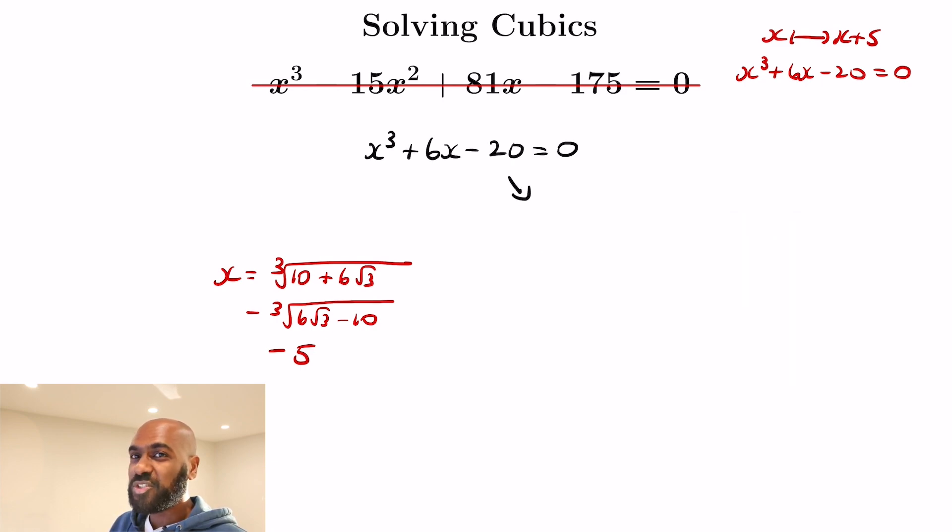Now if you actually played with this, you might notice something a little bit funny about what we did. It's a little more complicated than we needed to do. So if you actually substitute x equals 2 here on the left hand side, you'll get 2 cubed plus 6 times 2 minus 20, which is 8 plus 12 minus 20, and that's 0.